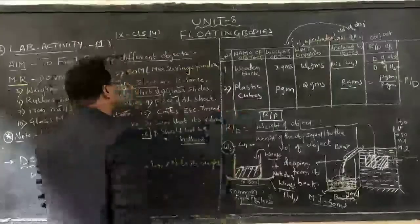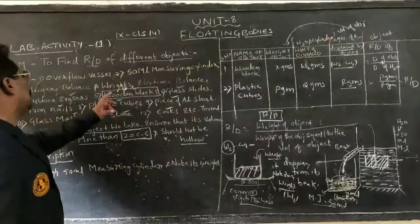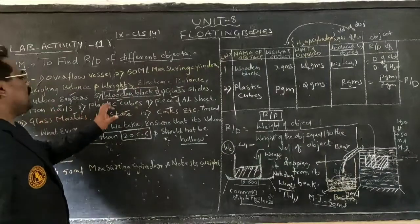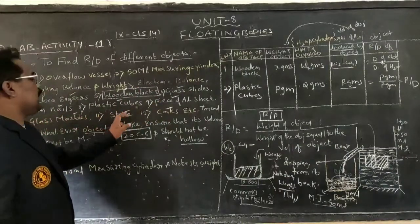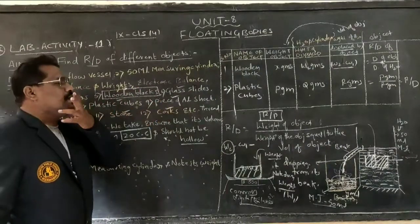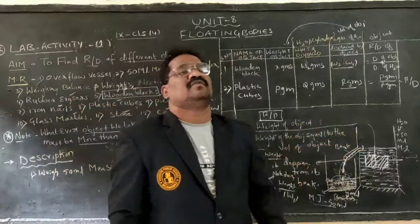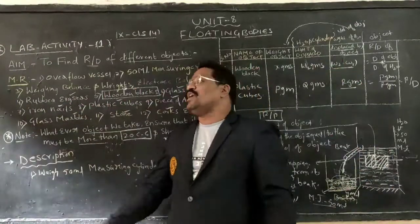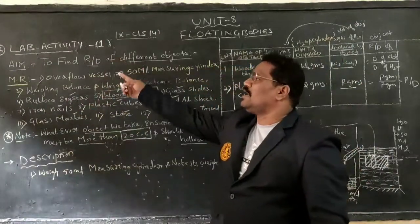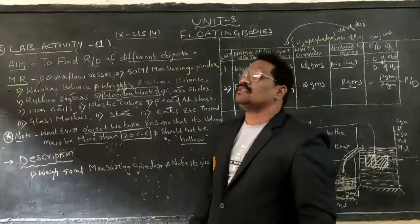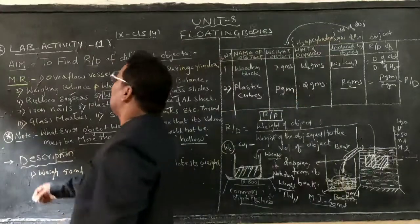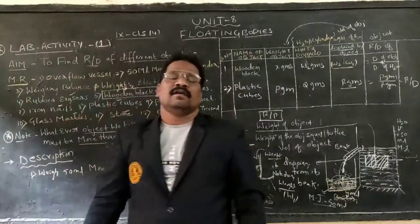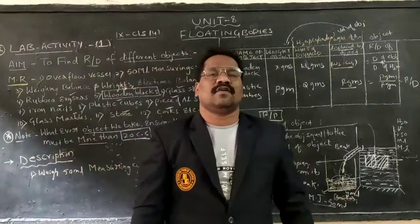In this way, for all the different articles — there are nine objects here — we can calculate their relative density with respect to the density of water. This is Lab Activity One. Thank you, children, for watching.